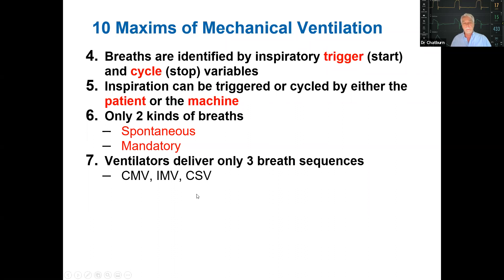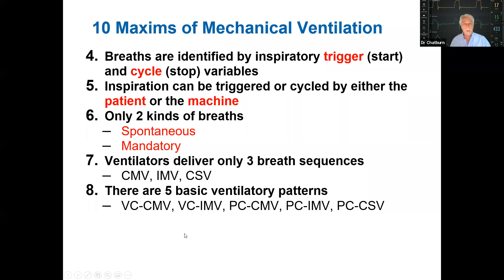All modes of ventilation can be categorized in terms of three breath sequences: continuous mandatory ventilation (CMV), continuous spontaneous ventilation (CSV), or intermittent mandatory ventilation (IMV). Pairing control variables — pressure or volume, derived from the equation of motion — with these breath sequences gives us five generic modes: volume-controlled CMV and IMV, and pressure-controlled CMV, IMV, and CSV. This makes classifying hundreds of mode names much more practical.